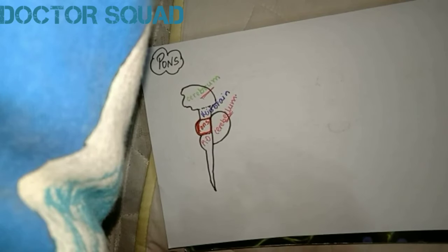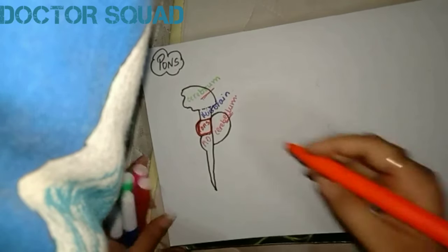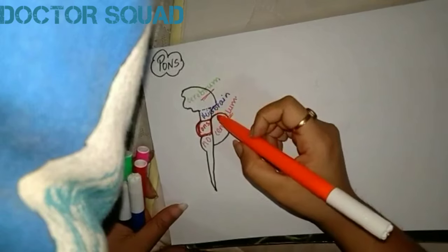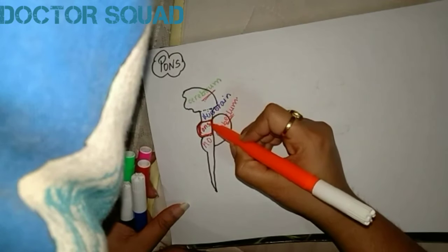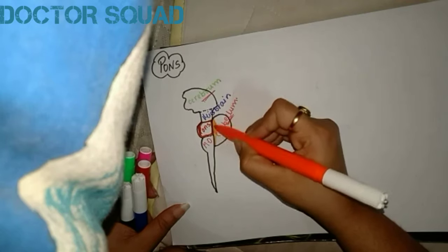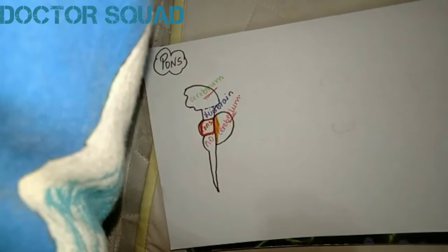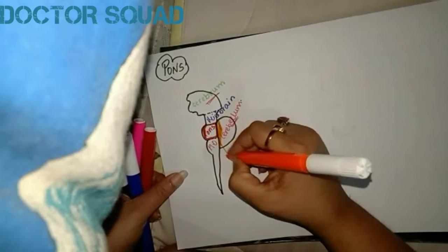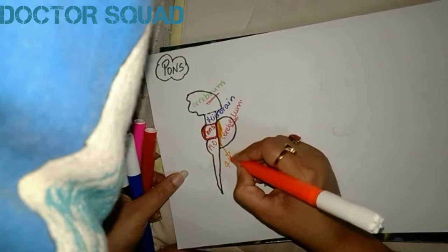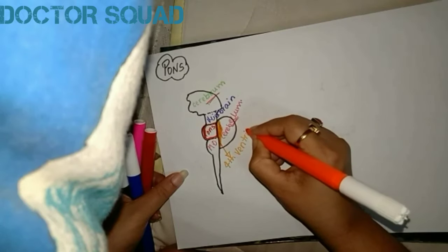Before starting with pons, there is a ventricle joining with pons and cerebellum. At the back of the pons there is a ventricle, and that ventricle is known as the fourth ventricle.